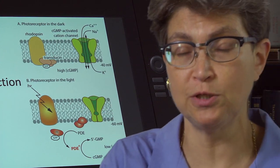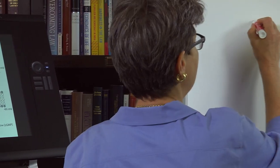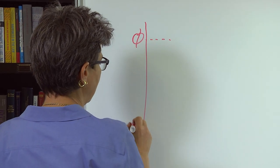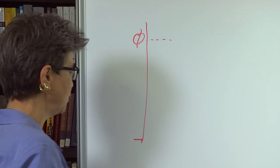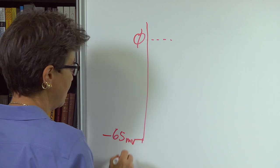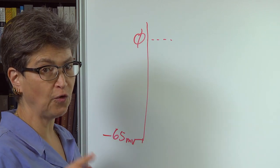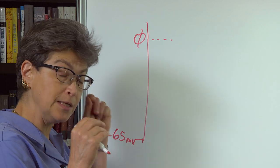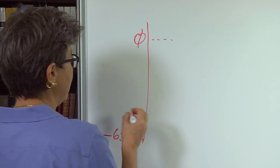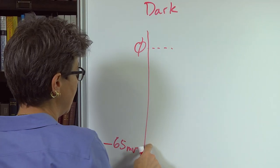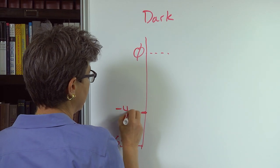If you have a non-specific cation channel, let's go over to the board to make sure we understand this. This is zero potential, and a typical neuron is going to sit at say negative 65 millivolts. But these photoreceptors have this resting dark current, this resting non-selective cation channel that's open in the dark. So here we are in the dark and the potential is not negative 65, it's closer to say negative 40 or so.